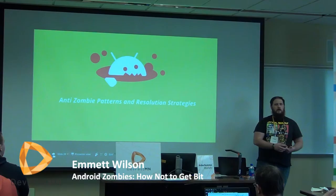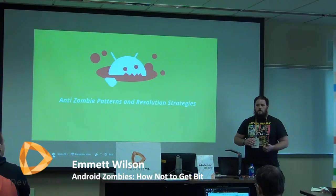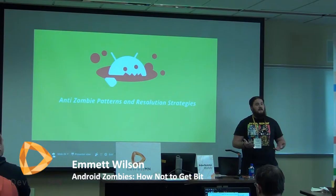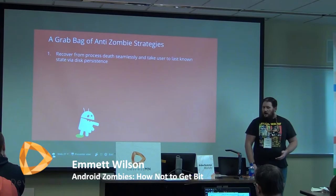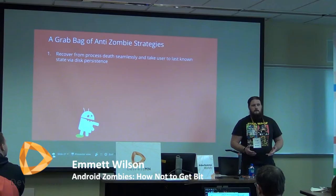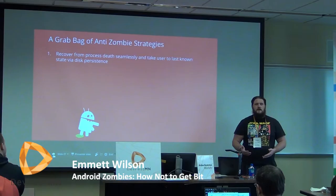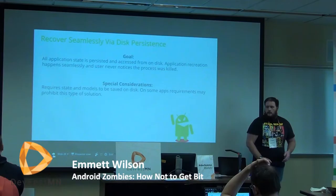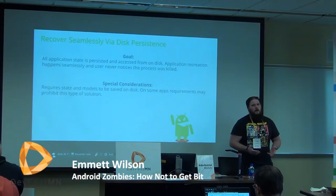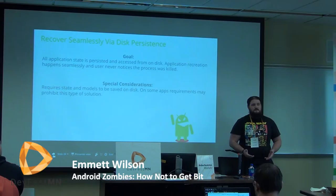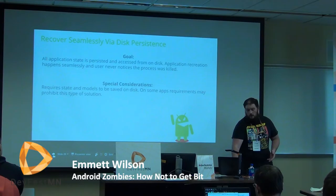We've gone over what Android does when destroying our processes, how we can test it, and what the dangers are — essentially global data and in-memory models. Now we're going to talk about ways to gracefully fail and give users the experience they expect when coming back to our application. The first approach is to seamlessly recover by making sure that instead of storing all your models in memory, you're relying on disk persistence. If your requirements don't allow storing data on disk due to security concerns, you'll need to consider other options.